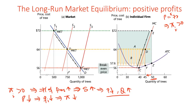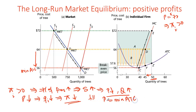This will continue until price is pushed down to the minimum of ATC for a typical firm — all the way to point C. Once price equals minimum ATC, profit for a typical firm like Noelle's is driven down to zero. If firms are earning zero economic profits, there is no further incentive for new firms to enter. So this is our long-run equilibrium. In the long run, price is driven down to minimum ATC, and all firms are breaking even. This is a stable equilibrium because with zero economic profits, no further entry occurs.